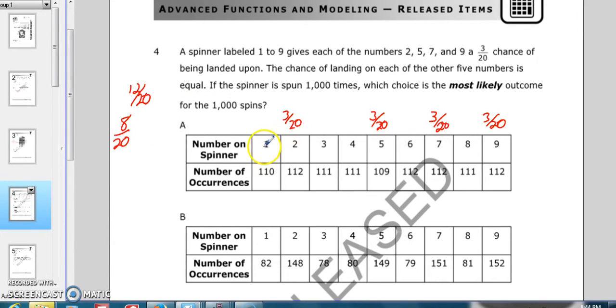Now how many choices is that? 1, 2, 3, 4, 5. So we need to divide the 8 out of 20 by 5.